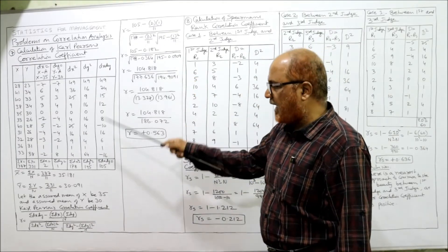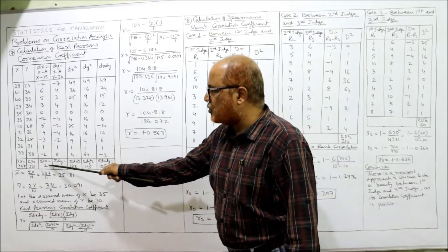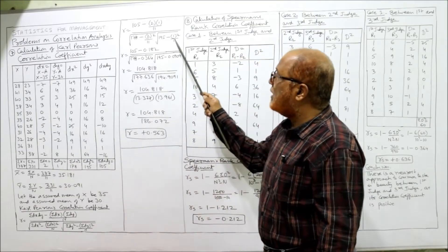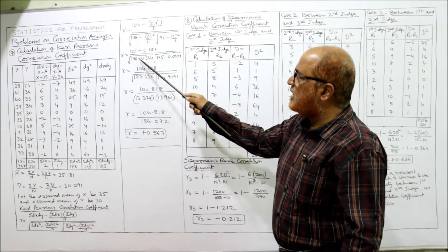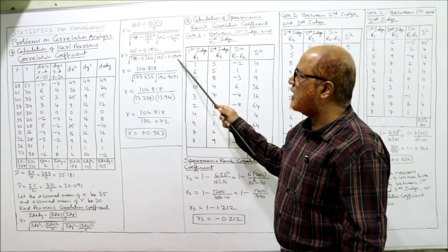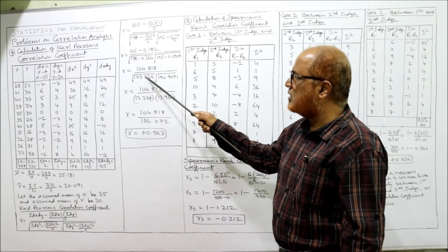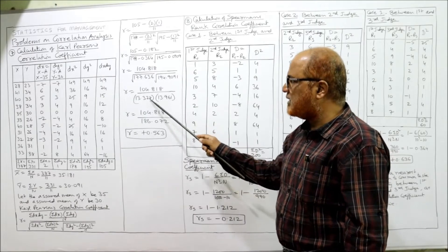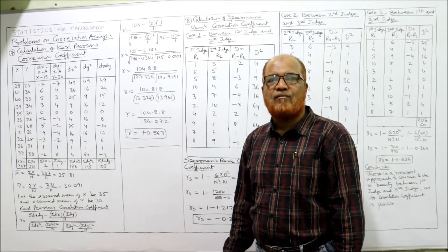Numerator: 105 − (2×1)/11 = 105 − 0.182 = 104.818. Denominator first term: √(178 − 2²/11) = √(178 − 0.364) = √177.636 = 13.328. Denominator second term: √(195 − 1²/11) = √(195 − 0.0909) = √194.909 = 13.961. Multiply the two roots: 13.328 × 13.961 = 186.072. Divide: 104.818 / 186.072 = 0.563.